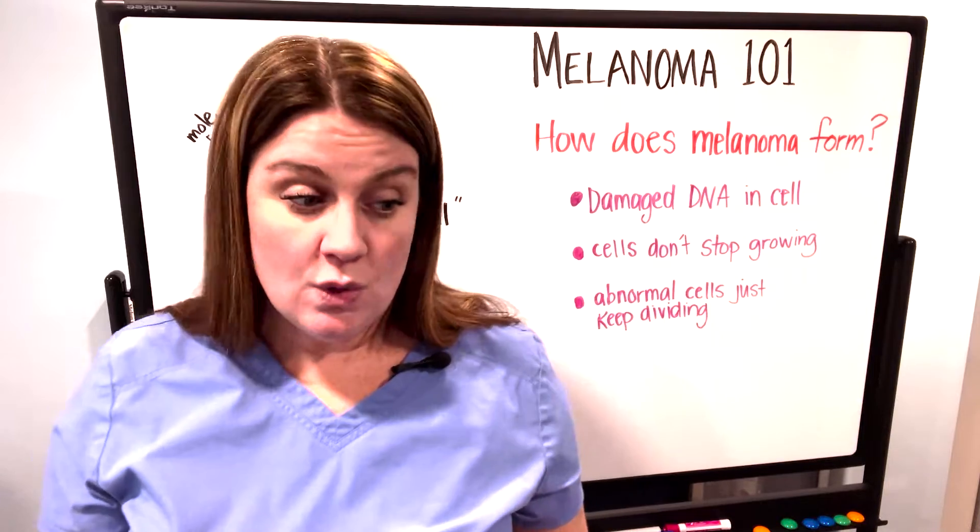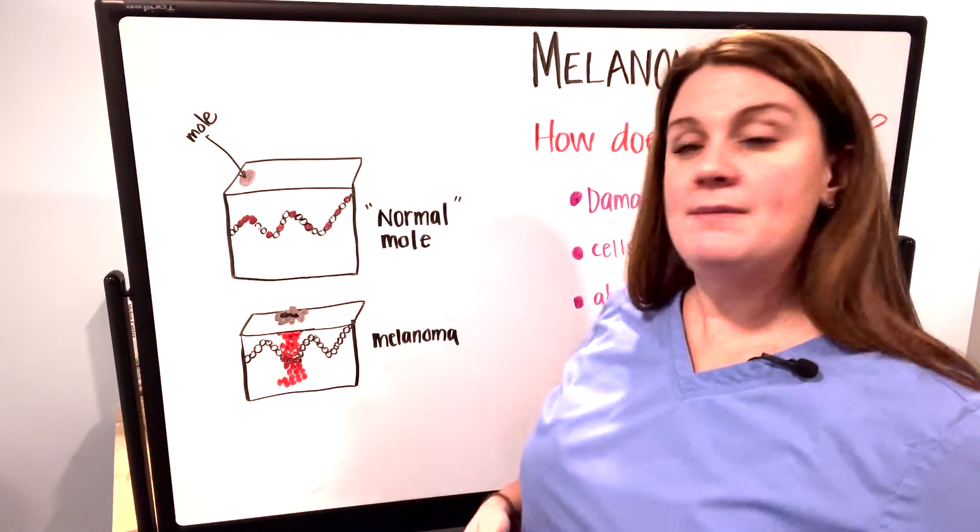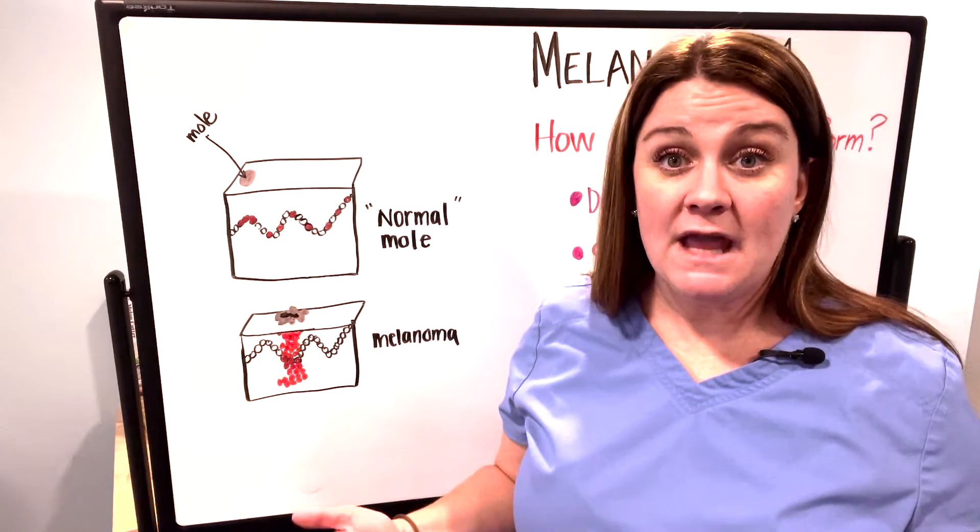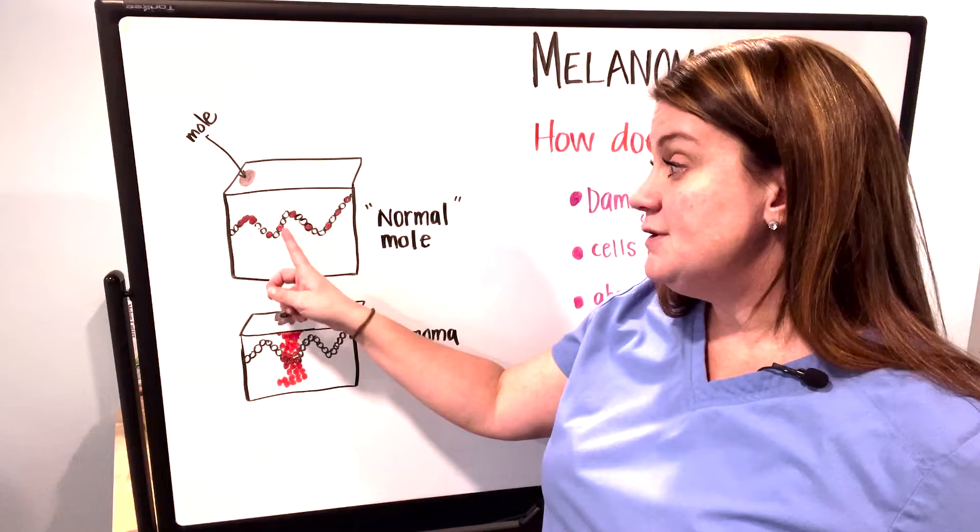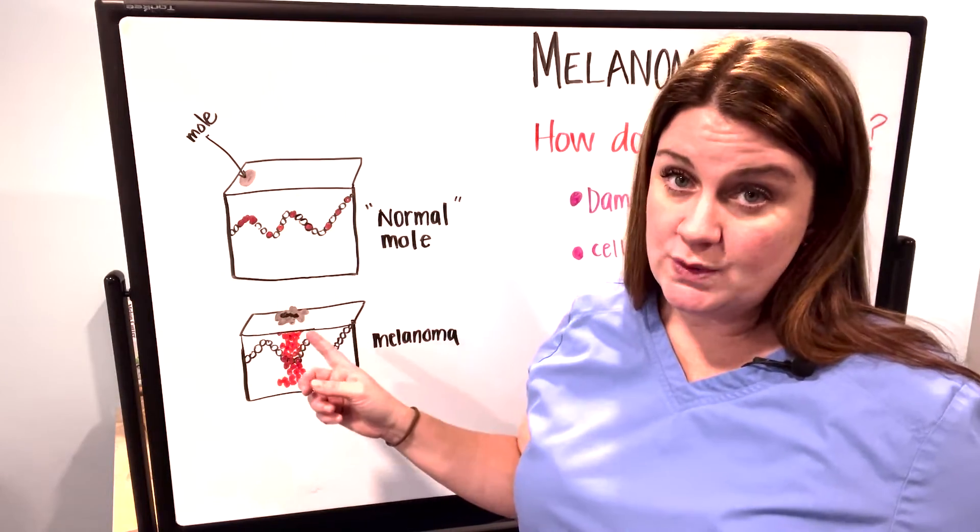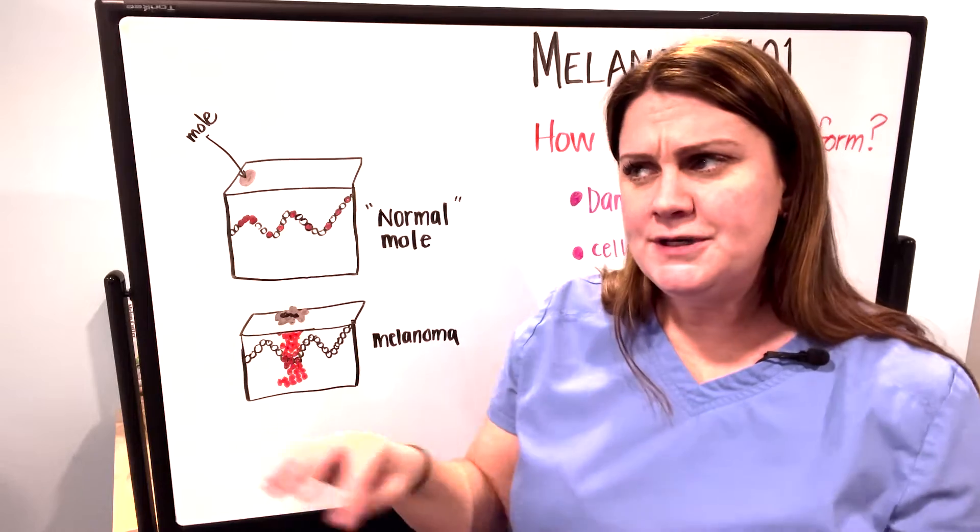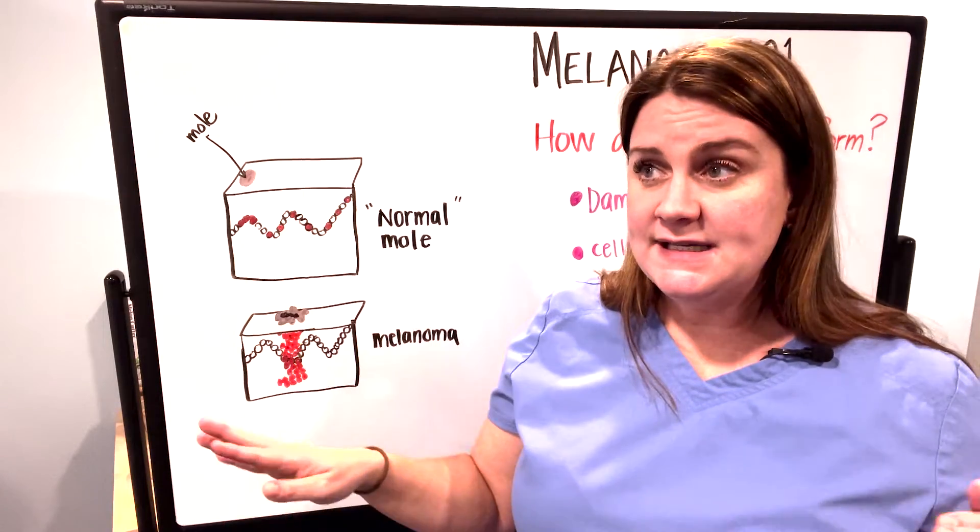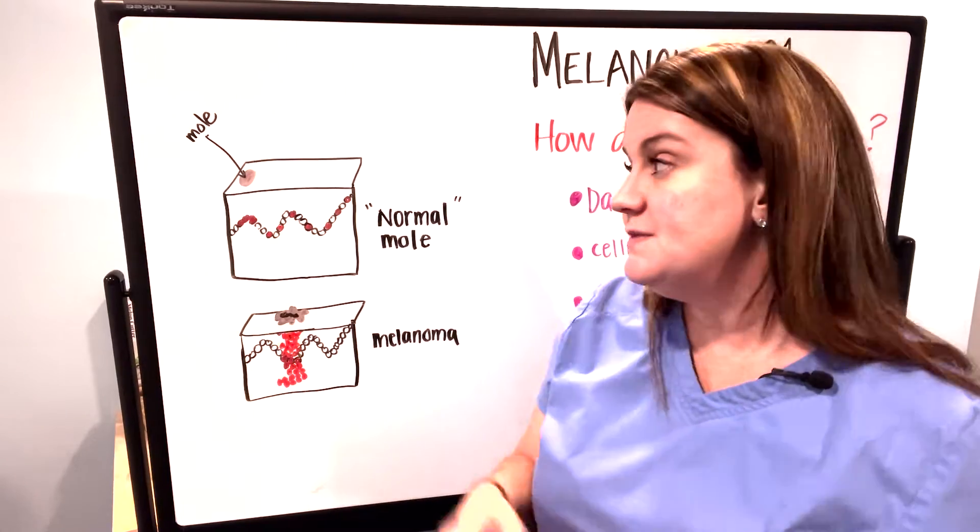We're going to look at this picture here. If you remember from our prior lecture on how moles form, melanocytes are present in this junction between the epidermis and the dermis. They're pretty evenly spaced for the most part, and when they form a little aggregate cluster, that's when a mole forms.